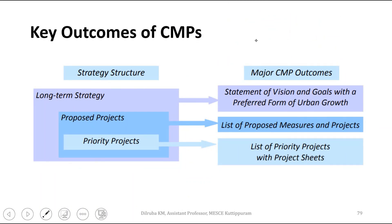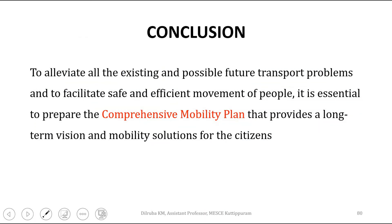The key outcomes of CMP include a strategic structure with a long-term strategy containing a statement of vision, goals, preferred form of urban growth, and a list of proposed measures and projects for a time span of 20 years or more, along with a prioritized project list with project sheets. In conclusion, to alleviate existing and future transport problems and facilitate safe and efficient movement of people, it is essential to prepare a Comprehensive Mobility Plan providing a long-term vision and mobility solution.